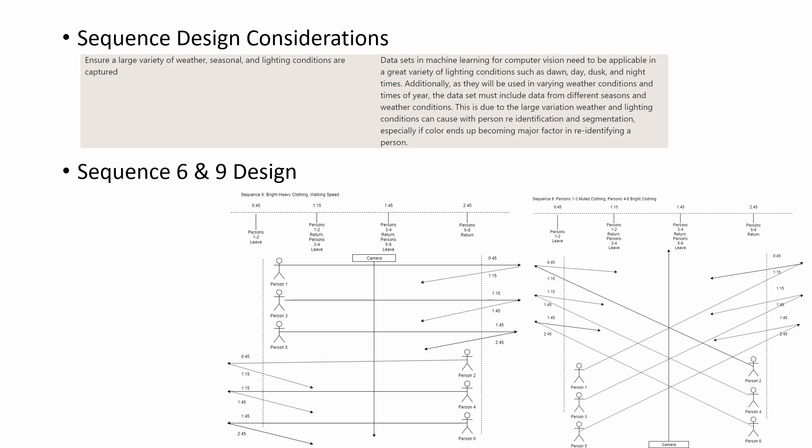Sequence 6, as shown by the picture to the bottom left, tests multi-person re-identification with the drone moving forwards throughout the sequence. Sequence 9, as shown by the picture to the bottom right, tests re-identification from person occlusion as the paths of the various participants intersect while the drone moves forward throughout the video.